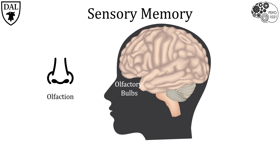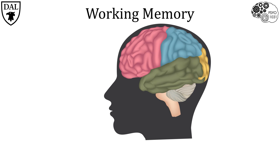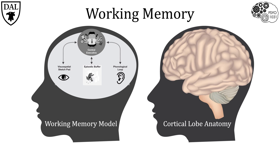The olfactory bulbs are actually not part of the cerebral cortex but lie just above the cribriform plate. It is important to note that different sensory modalities are constantly being processed at the same time in your working memory. As all of these different processes take place in different parts of the brain, different aspects of working memory models can be hypothesized to be occurring in distinct cortices.